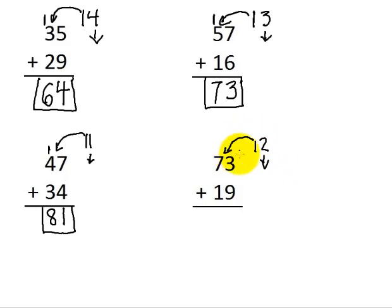So 3 plus 9 is 12. 2 comes down. 1 moves over. 7 plus 1 is 8, plus 1 is 9. So 73 plus 19 is 92.